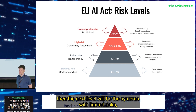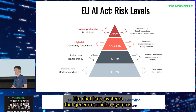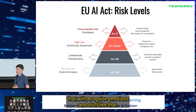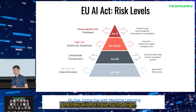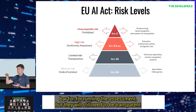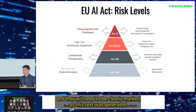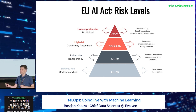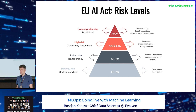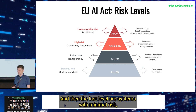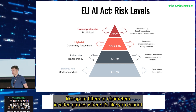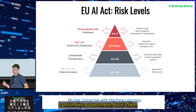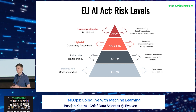The next level is systems with limited risks — like chatbots, systems that generate articles, help make reservations, or recognize emotions. These will not have as high a bar for the assessment, but will still need to be transparent — clearly marked as 'this text was generated by an AI,' or 'you are now talking to an AI system, not a real representative.' And the last level is systems with minimal risk, like spam filters or characters in video games, where you can voluntarily do your conformity assessment but it's much less regulated.